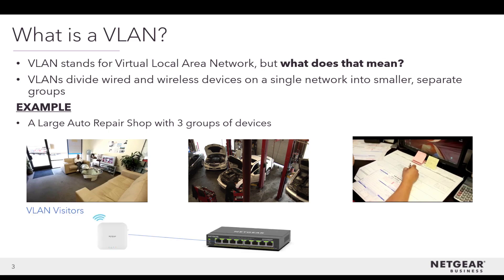The first VLAN is dedicated for visitors using an access point. The second VLAN is for mechanics and their tools, and the third VLAN is for administrators. All three VLANs are separate from each other and can access the internet at the same time. If anyone from any VLAN would like to communicate with another, they'll need to talk to the IT administrator for permission.